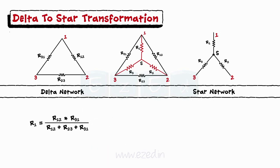Thus, we can write the formula for R2 and R3 as R2 equals R23 into R12 upon R12 plus R23 plus R31 and R3 equals R31 into R23 upon R12 plus R23 plus R31.